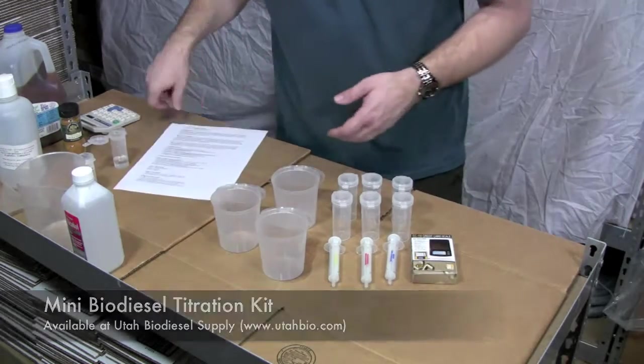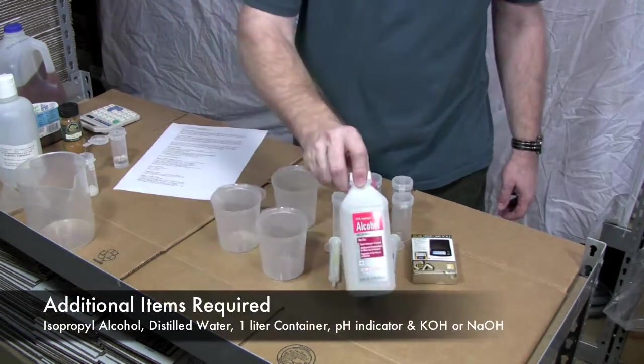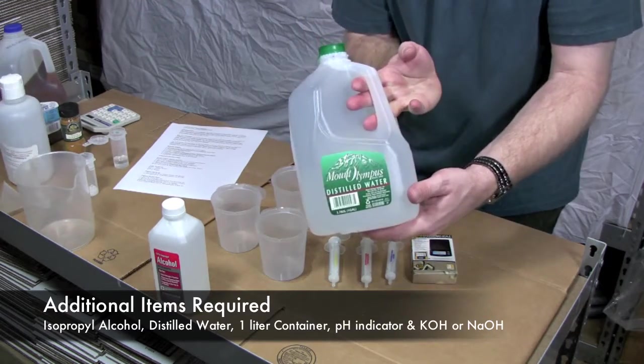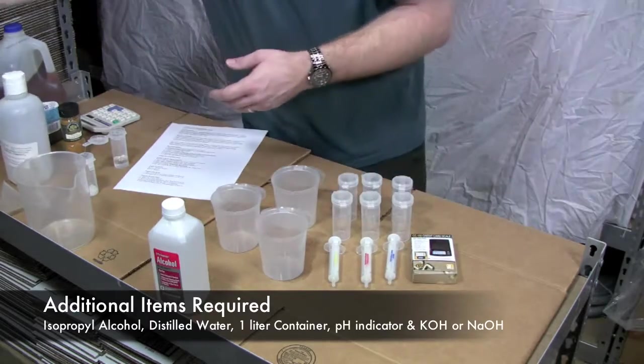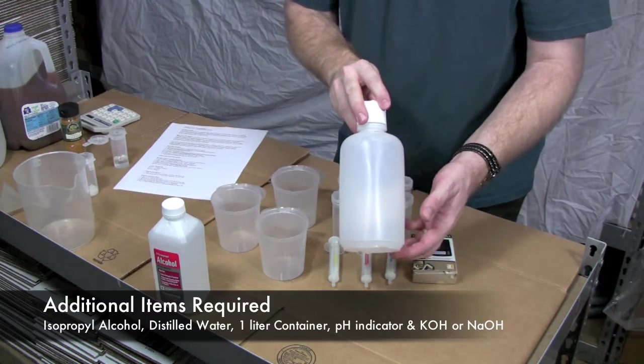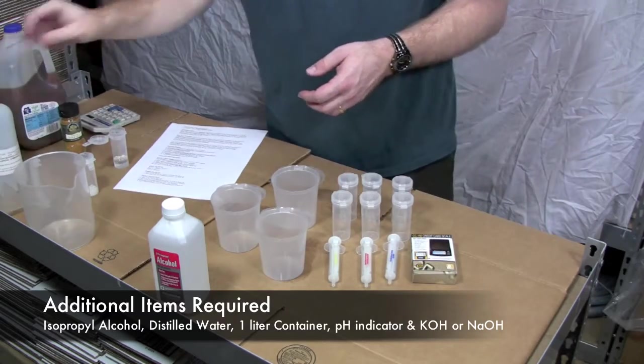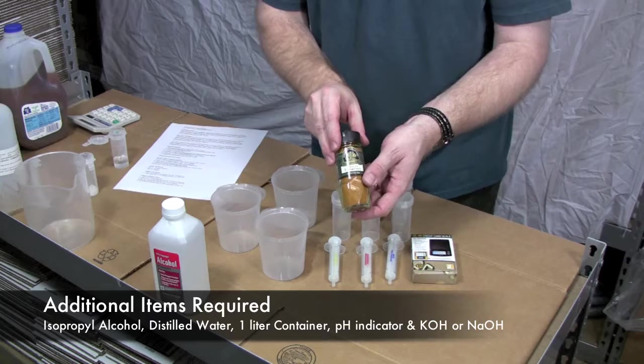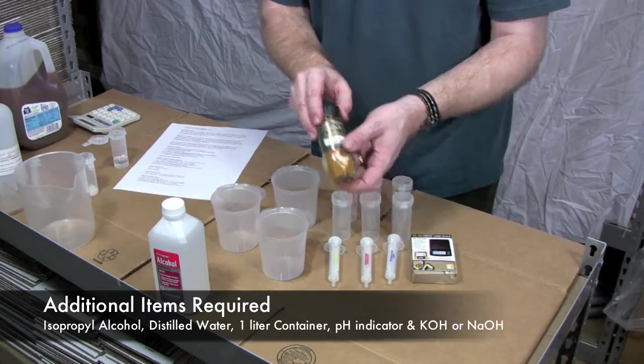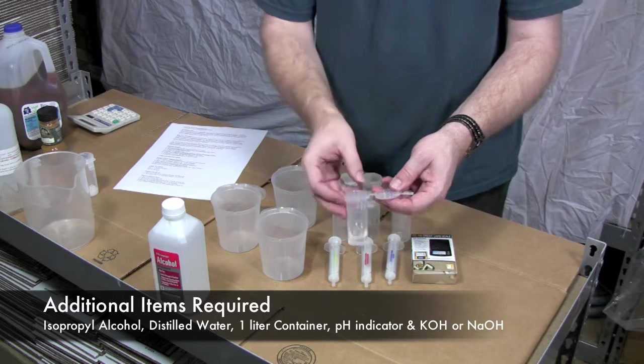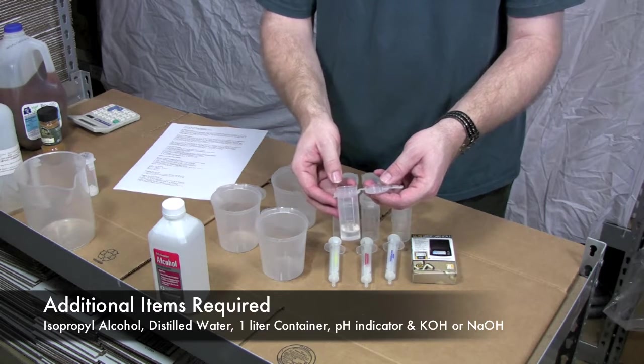What you'll need to purchase in addition to this kit is some isopropyl alcohol, some distilled water and a container that can hold one liter of water. You'll also need for a pH testing solution either turmeric powder that you can pick up at a grocery store or phenolphthalein that you can purchase online through Utah Biodiesel Supply or other vendors.